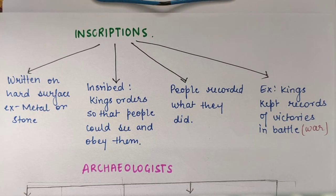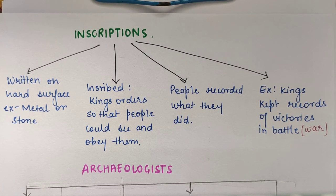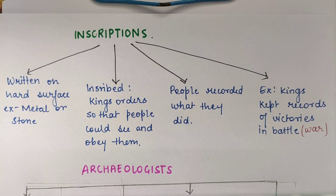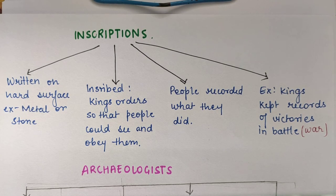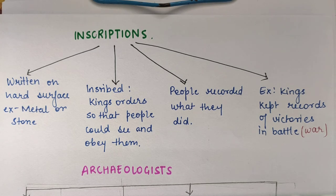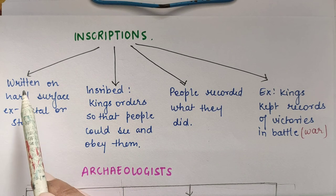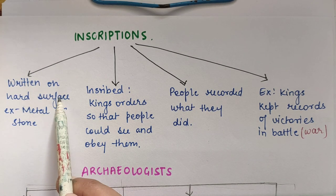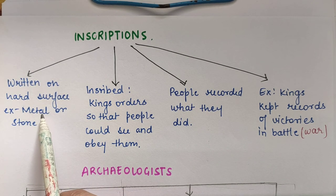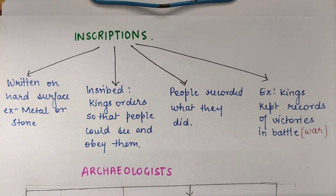The second thing by which we come to know about our past is inscriptions. Inscriptions are also written evidence — woh bhi likhe hote the — but there is a twist. Woh kahan likhe hote the? Jaise manuscripts palm leaf pe ya bark pe likhe hote the, but inscriptions were written on a hard surface — that is on metal or stone. Ye ya toh metal pe likhe jaate the, ya stones pe.